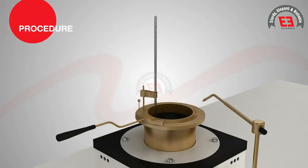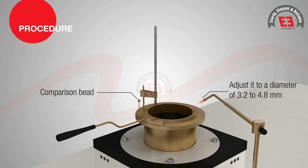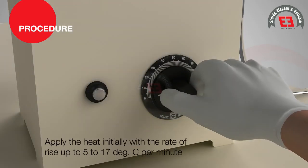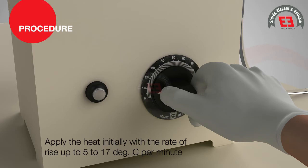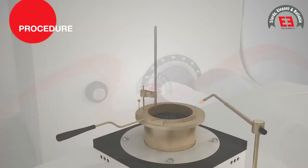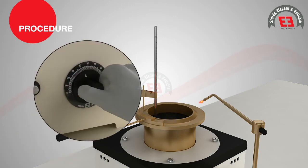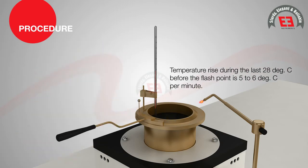Suspend the thermometer in a vertical position in the thermometer clip. Light the test flame and adjust it to a diameter of 3.2 to 4.8 mm to match the size of the comparison bead. On the regulator, apply heat initially with a rate of rise of 5 to 17 degrees Celsius per minute. When the test temperature is approximately 56 degrees Celsius below the expected flash point, decrease the heat so that the rate of rise of temperature during the last 28 degrees Celsius before the flash point is 5 to 6 degrees Celsius per minute.